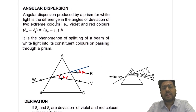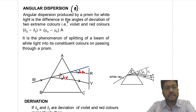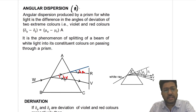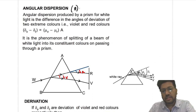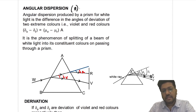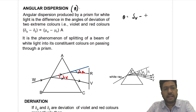Now, what is angular dispersion, represented by θ? The violet light is deviated by an angle δ_v and the red light is deviated by an angle δ_r. The difference between the deviation of violet light and red light is called the angle of dispersion. So if this is δ_v and this is δ_r, then this angle is θ. So θ = δ_v − δ_r.